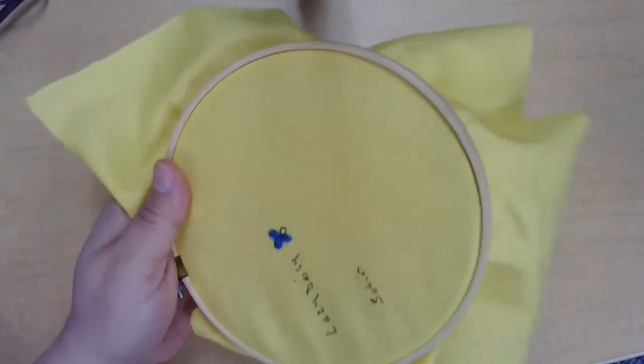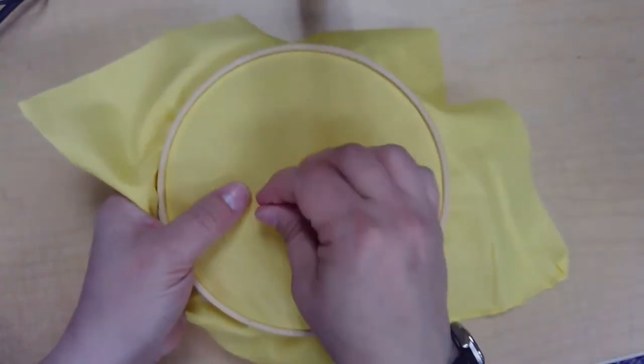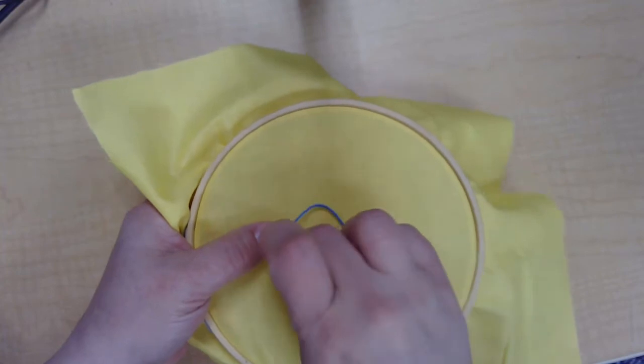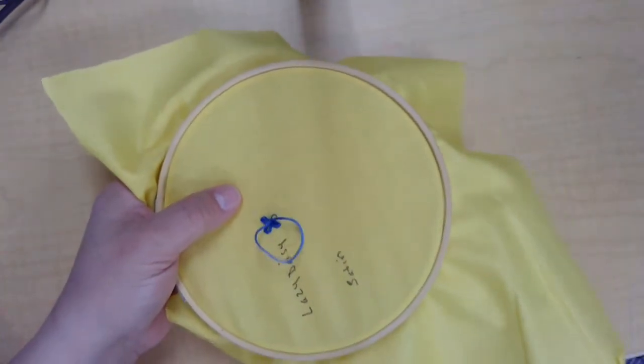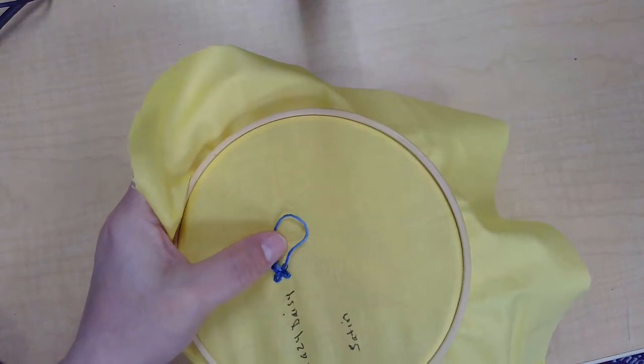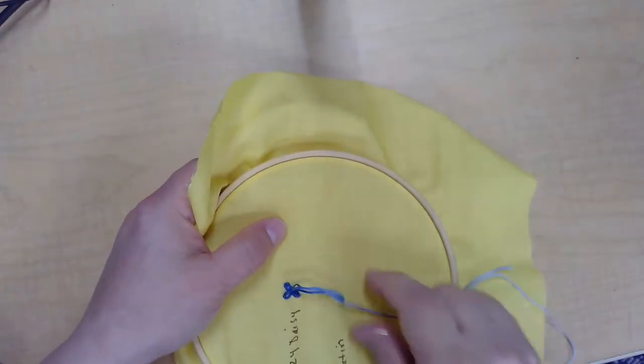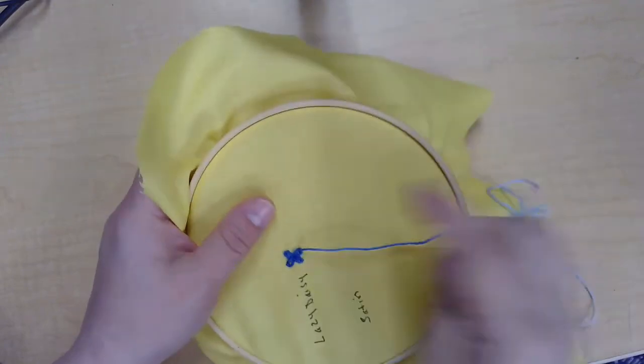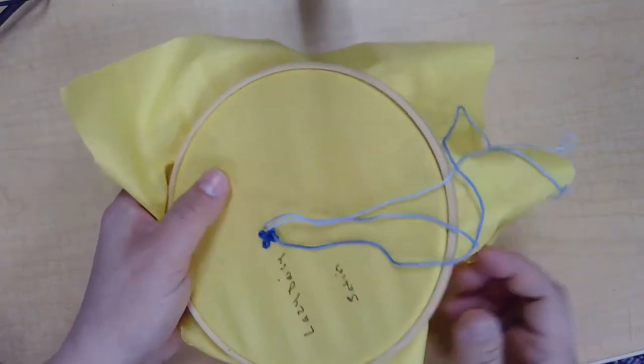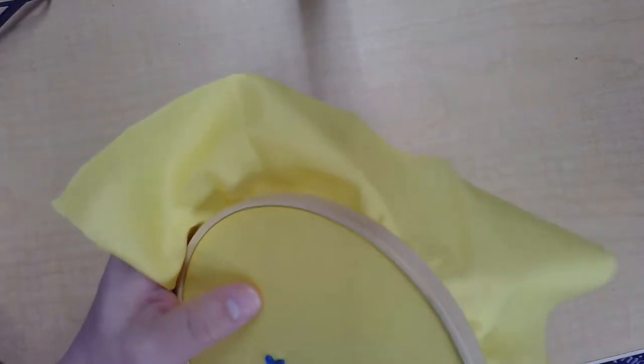One more for this flower. Up in the middle, back down in the center, leaving your loop. Catching it at the top of the petal by coming back up. And then back down, securing your loop in place. And there you have a lazy daisy.